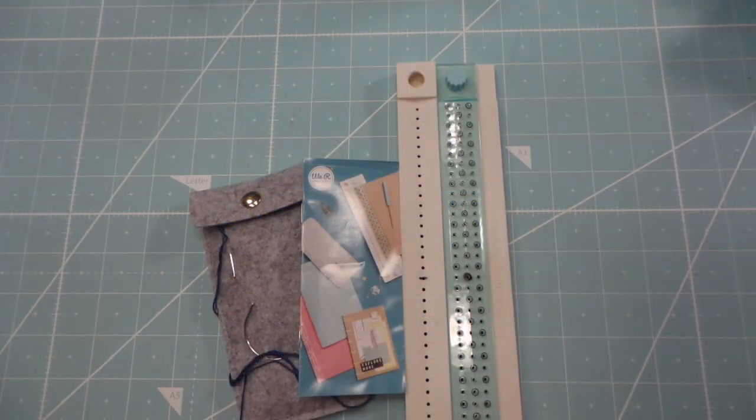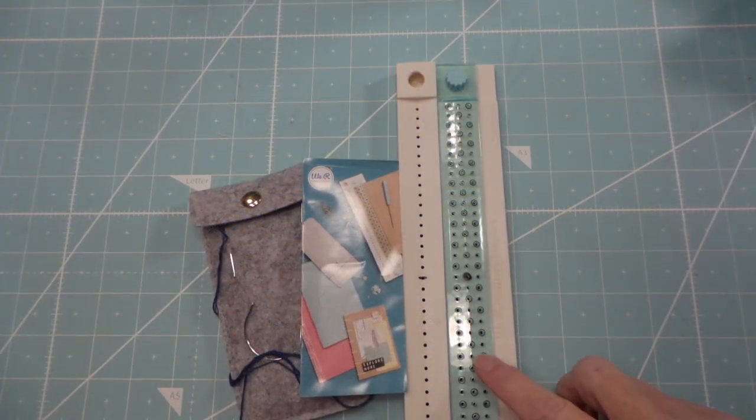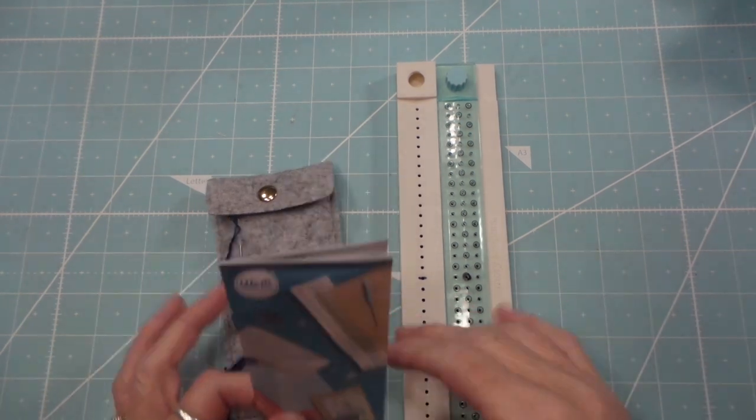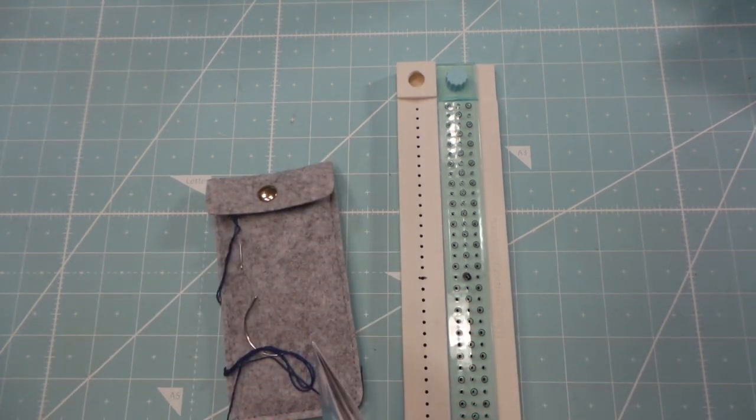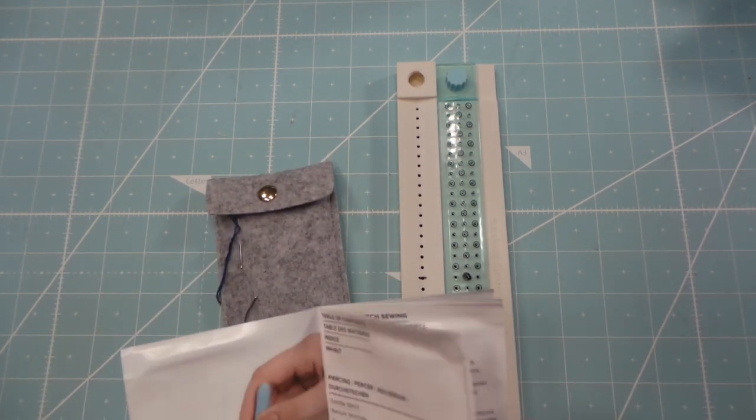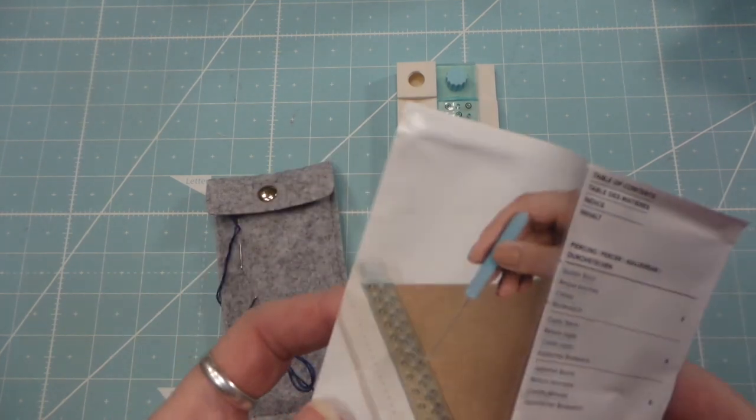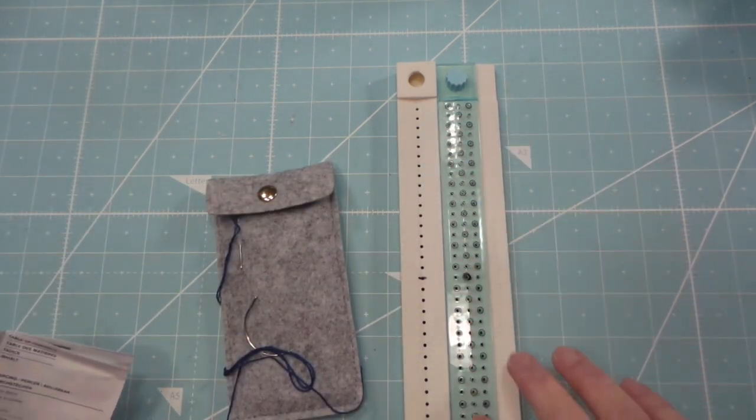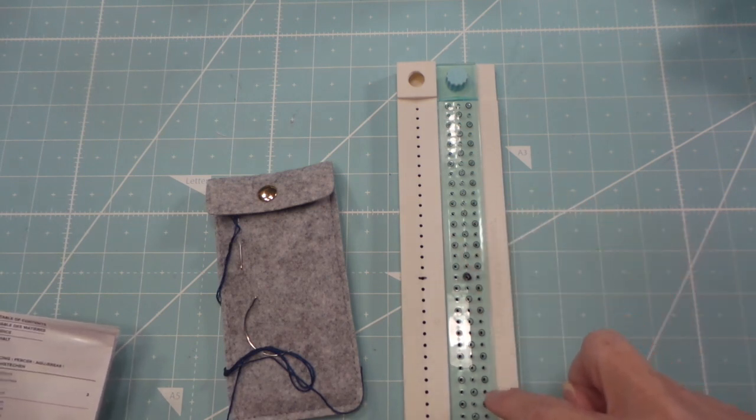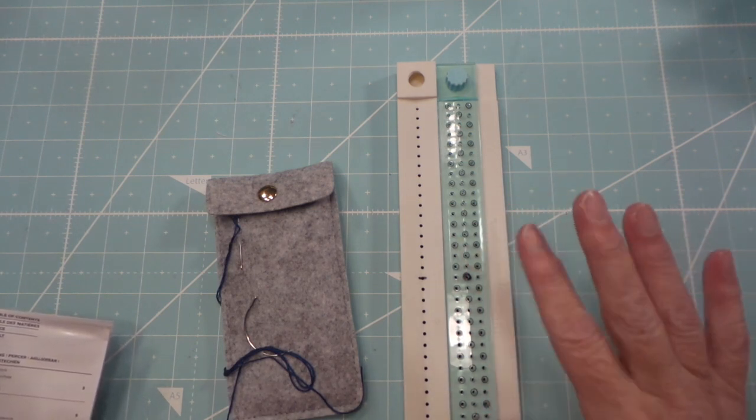Hi everybody, this is Roxy and I bought the We Are Memory Keepers bookbinding punch set and I love it. I've had some fun with it. It's super easy. This side is for making a design on your cover.